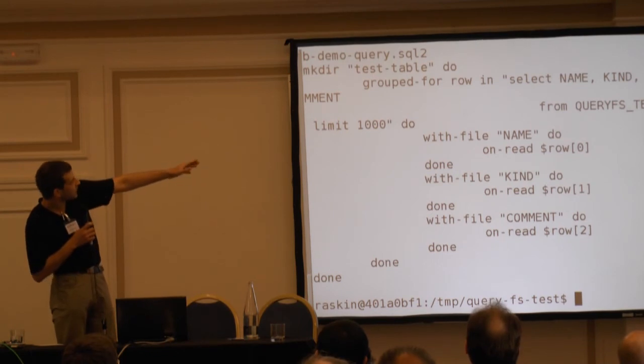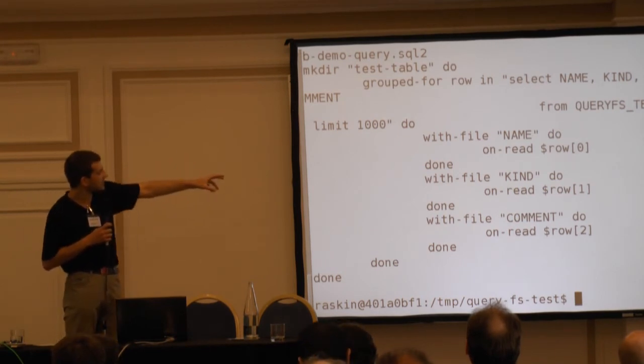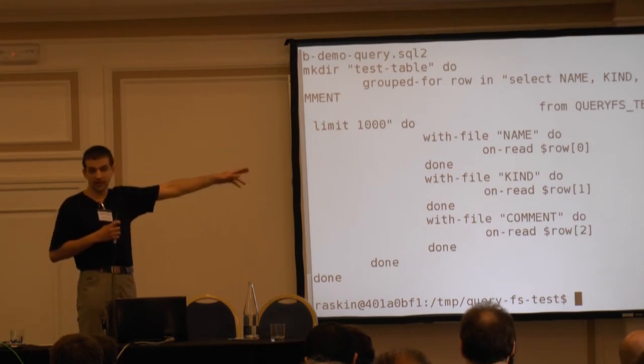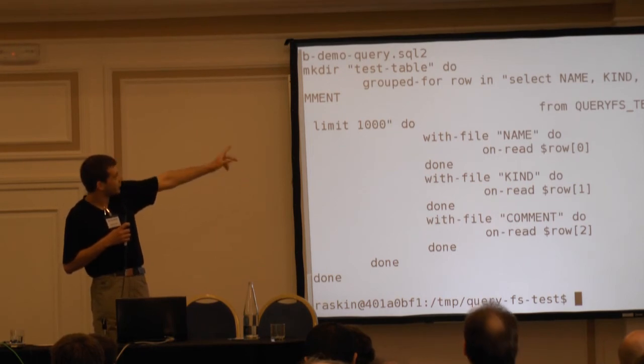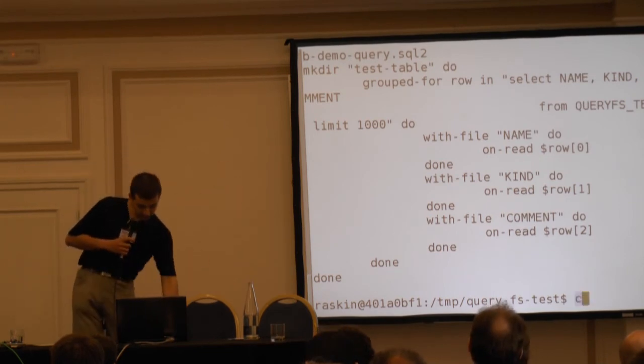As you see, I have here a quite real query. I just say, select some columns from some specific table and then I say that I want to save it as a row. And then I say that I want to access the first element as a file called name, second element as a file called time, and third element as a file called comment.